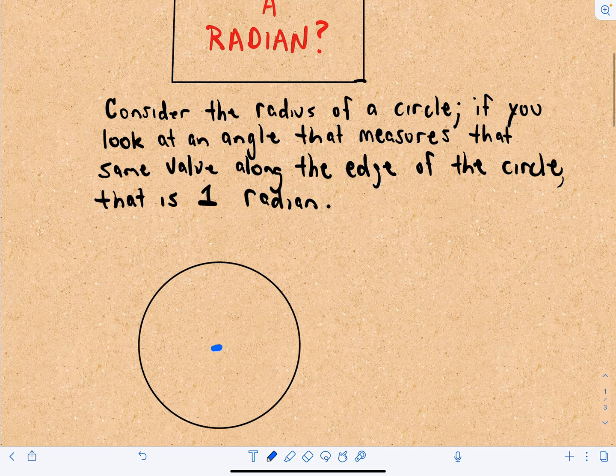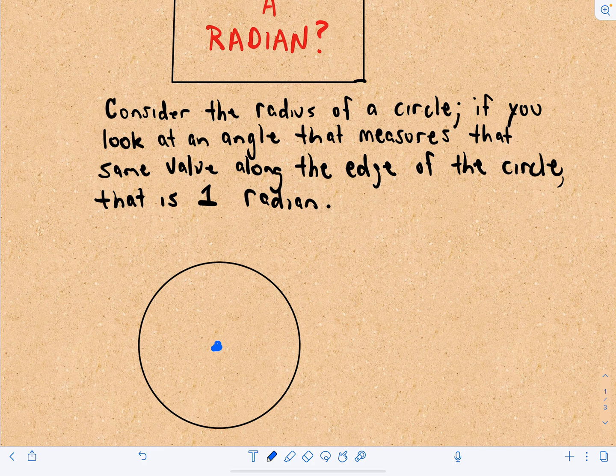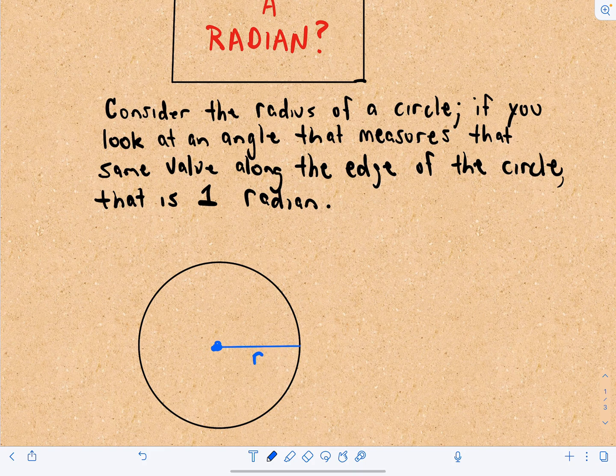It shouldn't take too long. So, consider the radius of a circle. Let's pretend that's the center, and I've got some radius here, r. And if you look at an angle that measures that same value along the edge of the circle, that is one radian.